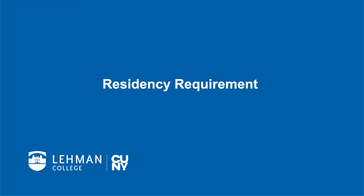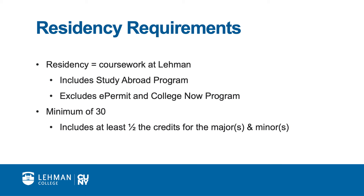Another type of graduation requirement is the residency requirement. Courses taken in residence refers to the coursework completed at Lehman. Although CUNY is one university system, courses taken on e-permit at another CUNY campus do not count toward Lehman's residency requirement. To meet the residency requirement, you must complete at least 30 credits of coursework at Lehman. This includes at least half the number of credits required for your declared major or majors, and minors if you choose to declare them.